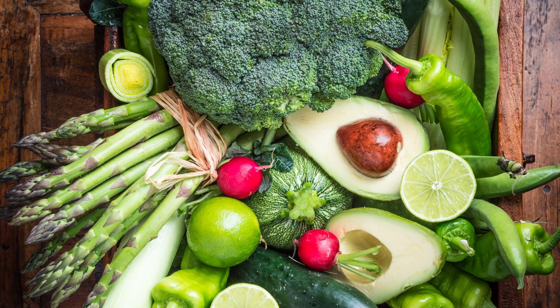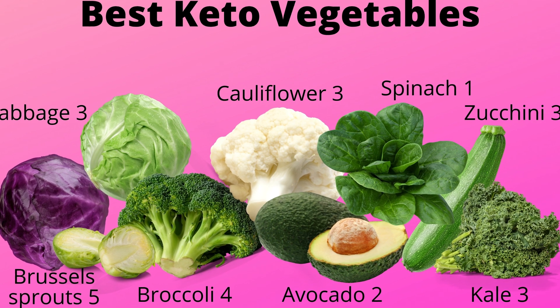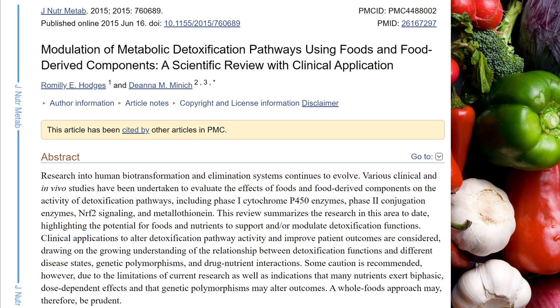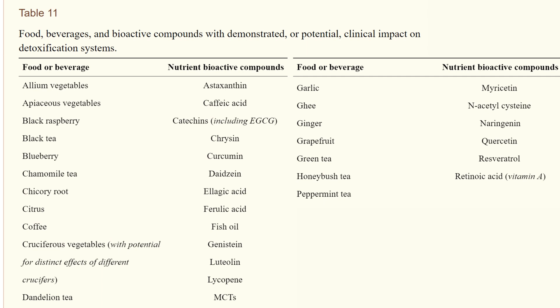Another important thing to do for reversing non-alcoholic fatty liver: eat more vegetables, especially greens such as kale and spinach, and cruciferous vegetables such as broccoli, cauliflower, and cabbage. You should eat them every day if possible. Plant foods are known to support liver health and help our bodies to detoxify. A recent study found that plant compounds in foods such as cruciferous vegetables, coffee, fish oil, garlic, ghee, ginger, turmeric, green tea, and several others are effective at detoxifying the liver.